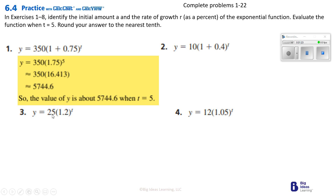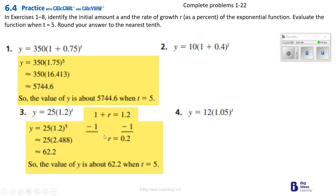So when we do this, we're going to be taking T and replacing it with 5. We see that we've got 1 plus R, which is 1.2. When we subtract 1 from both sides, we see that R equals 0.2, so the rate of growth is 0.2. Then we're taking 25 times 1.25 to the fifth power — that gives us 2.488. We multiply that to 25, giving us 62.2. So the value of Y is about 62.2 when T is 5.